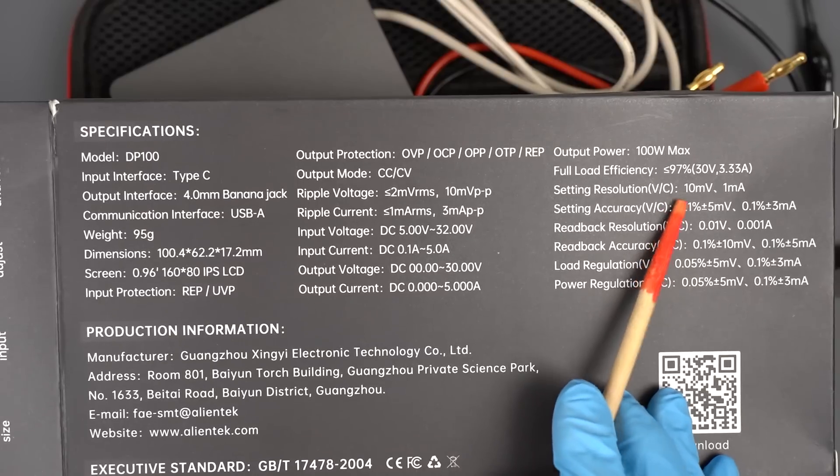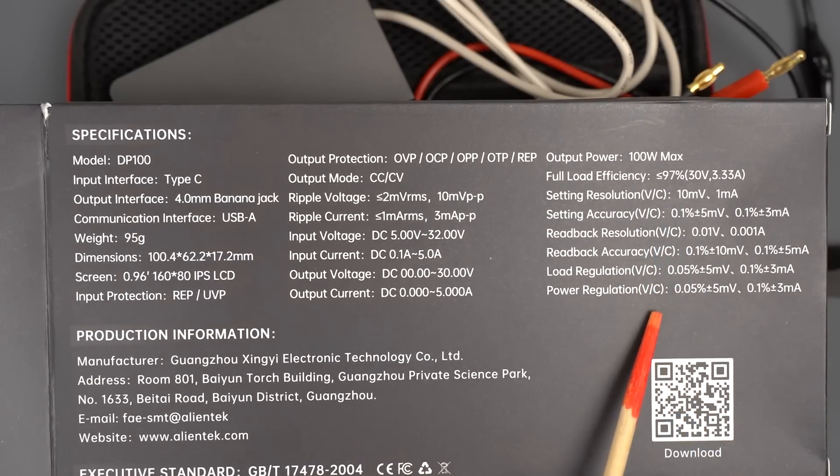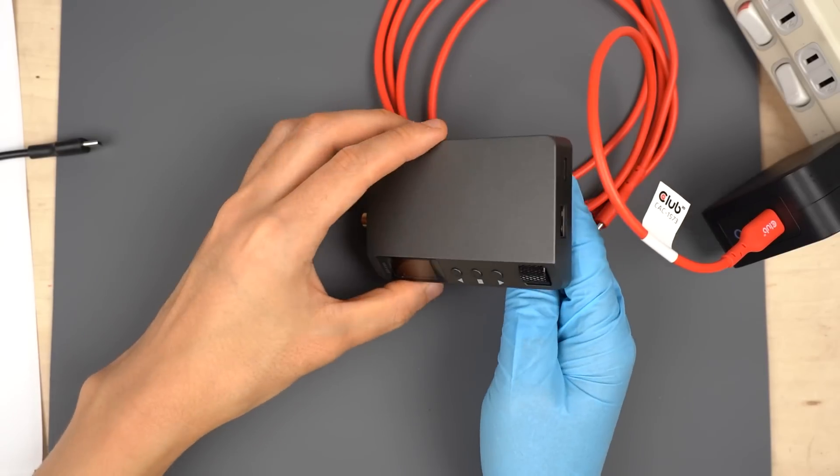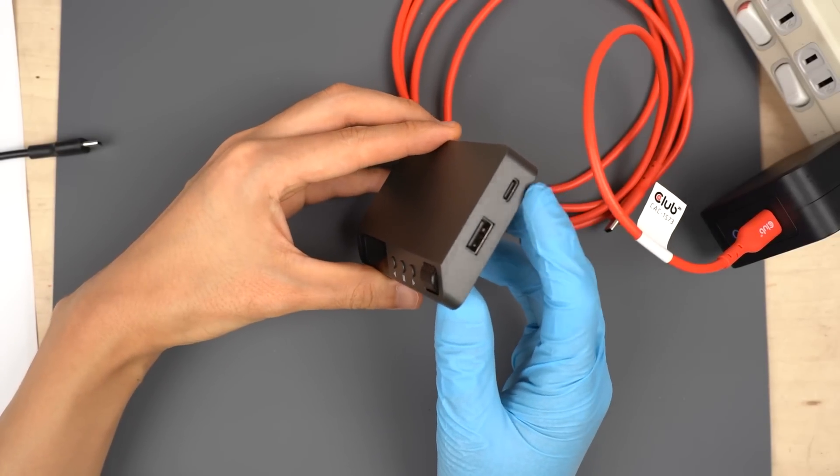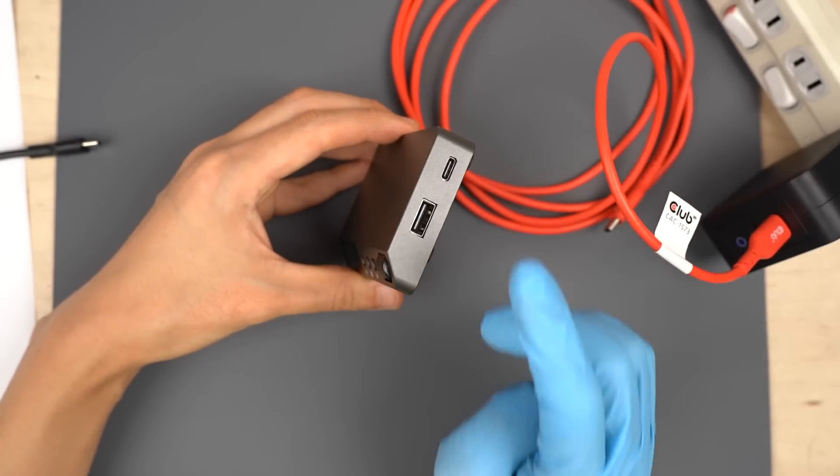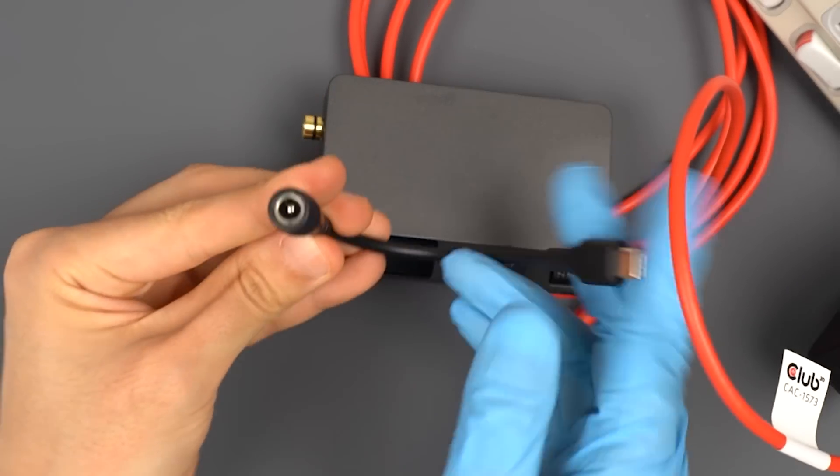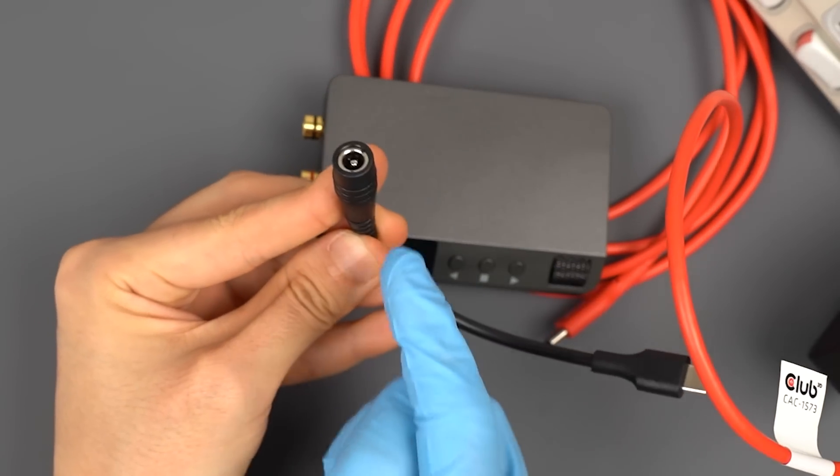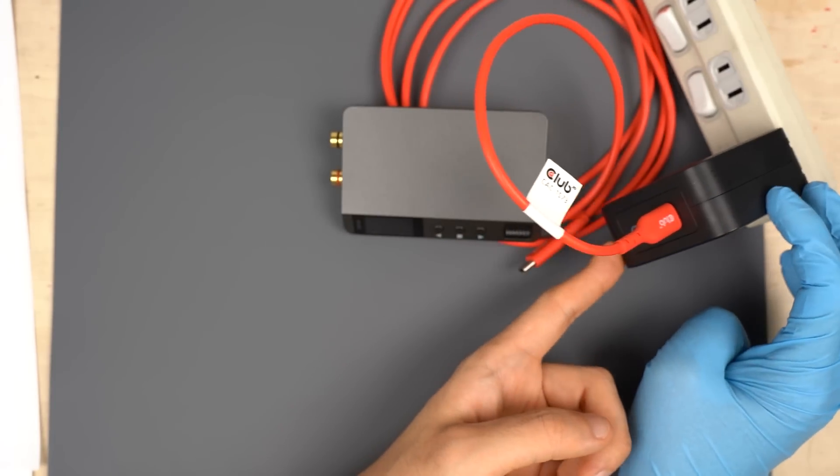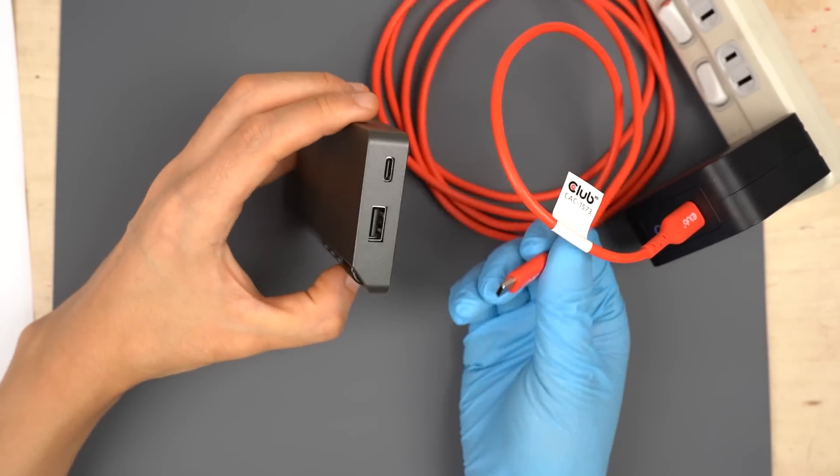The efficiency is quite high. It says 97% maximum. The resolution of voltage and current is also high. This power supply seems pretty high quality. Let's actually use it. This power supply takes power from USB-C. So you'll need a USB charger to supply power. If you don't have a charger, you can use this cable. It connects USB-C to an AC adapter. This cable came in the set, so you don't need to purchase anything. Recently, most smartphone chargers have USB-C ports, and most of them support PD. Therefore, you don't need anything special to use this power supply.